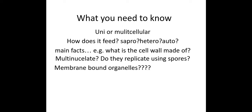For each kingdom you need to know: are they unicellular or multicellular — made of one or many cells? How does it feed — is it saprotrophic, heterotrophic, or autotrophic? A saprotroph feeds on dead or decaying matter. Heterotrophic means getting organic material from something else, like a mammal eating an animal or plant. Autotrophic means making its own food from inorganic matter — for example, plants are photoautotrophs, making food from light.